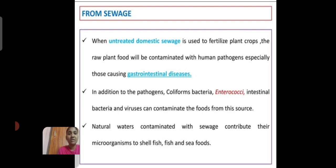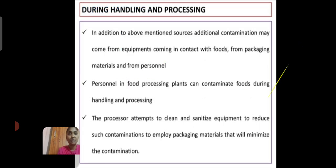In addition to pathogens, coliform bacteria — for example, enterococci — intestinal bacteria and viruses can contaminate food from this source. Natural water contaminated with sewage contributes microorganisms to shellfish, fish, and seafood during handling and processing.